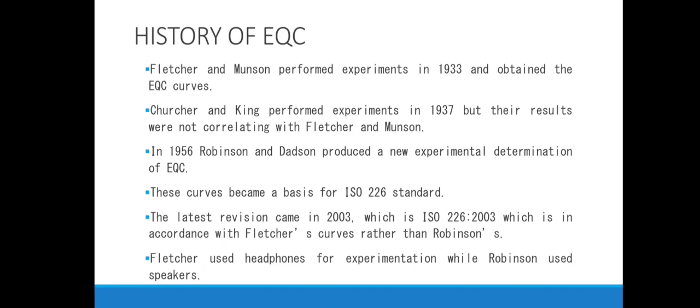Now let's study the history of equal loudness contour. Fletcher and Munson were the first people to perform experiments to determine the EQC curves, in 1933. Churchill and King performed experiments in 1937, but their results were not correlating with Fletcher and Munson's. In 1956, Robinson and Datsun produced a new experimental determination of the EQC, which became the basis of the ISO 226 standard.